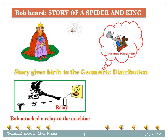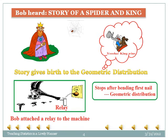Bob heard about the king's story and implemented it in his machine. Bob's ordinary automatic machine was bending several nails while working. He decided to use a relay system such that if any nail is bent by the hammer, the machine should stop automatically. Bob's machine stops after bending the first nail — Bob is making use of the geometric distribution.